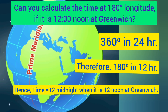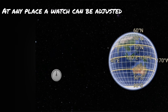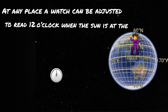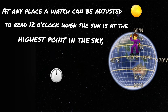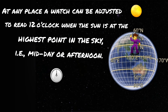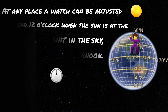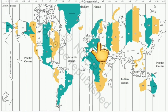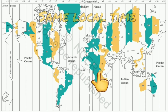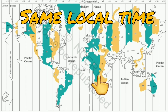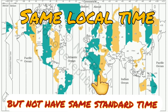At any place, a watch can be adjusted to read 12 o'clock when the sun is at the highest point in the sky — that is, midday. The time shown by such a watch gives the local time for that place. You can see that all the places on the same meridian of longitude have the same local time, but they will not have the same standard time. Keep this in mind.